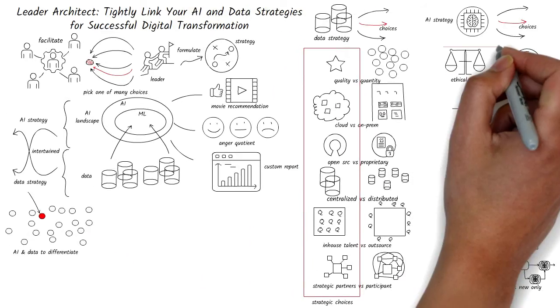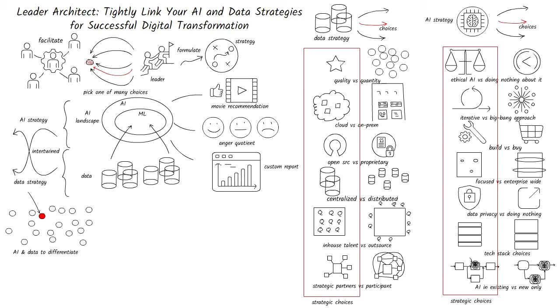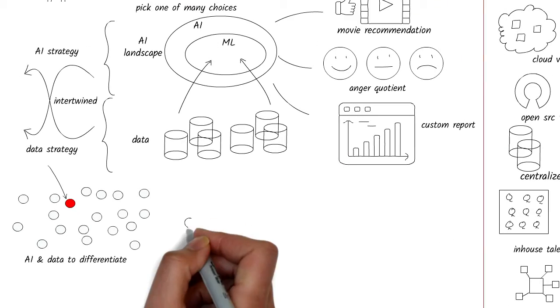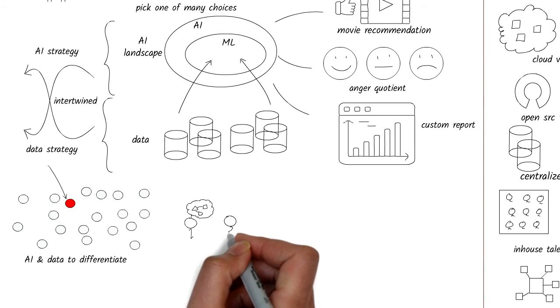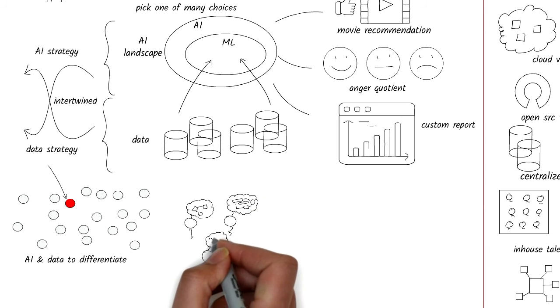Each of these choices require thoughtful consideration and alignment with the strategic, operational, and cultural aspects of the organization. A team with an architectural mindset is able to visualize these different options and combinations and facilitate conversation with leadership to make these decisions.